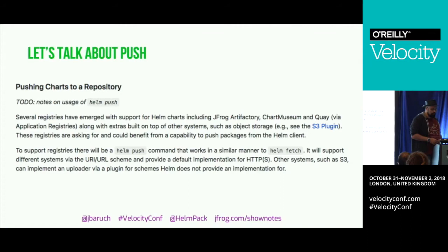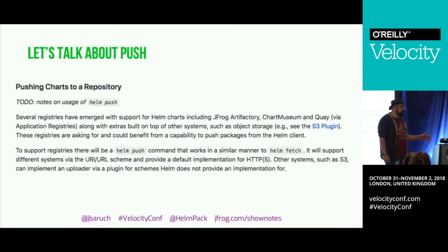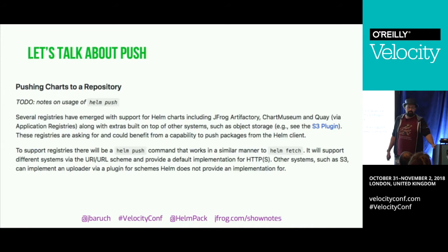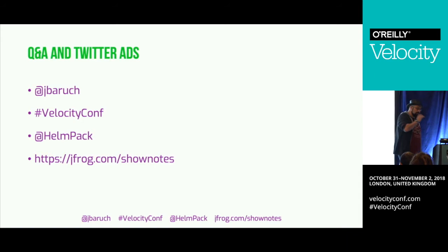So in summary, Helm 3 improvements include: getting rid of Tiller, introducing a programming language for the templating engine, and the ability to push — which will encapsulate the layout and allow it to evolve into a more robust one that won't kill your client and server when you have a lot of charts. With that, the show notes with all the links are at jfrog.com/shownotes. Now we have six minutes for questions — thank you very much.